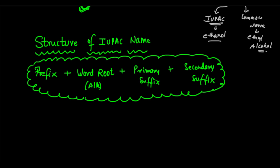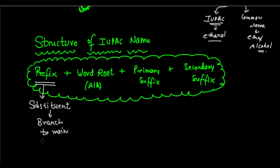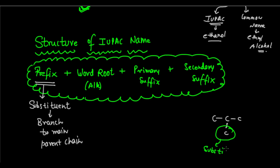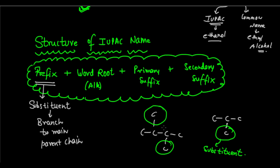The prefix basically gives us an idea of any substituent present on the compound. A substituent is basically a branch to the main parent chain. For example, if you have a compound and you attach one carbon to it, that carbon which forms a branch is going to be the substituent. Similarly, if you attach one carbon here and one carbon there, those two carbons are going to be substituents.